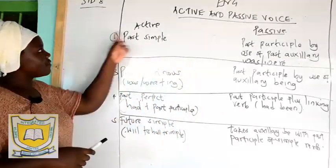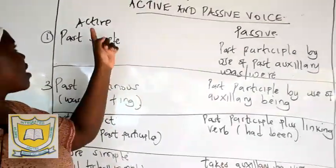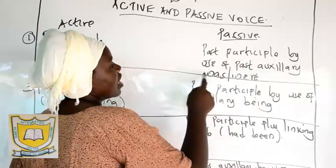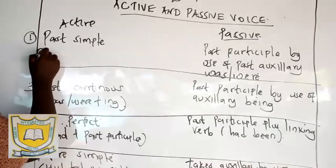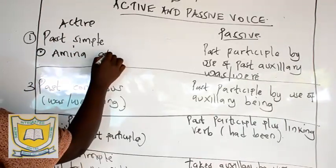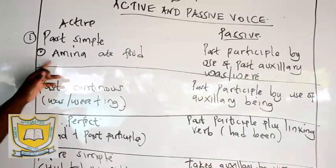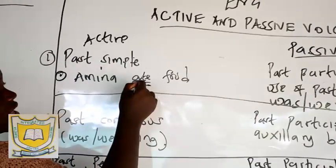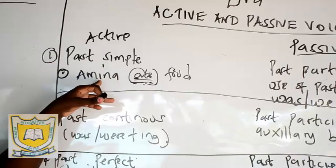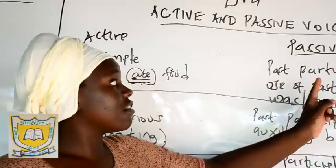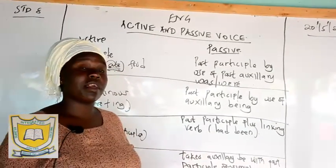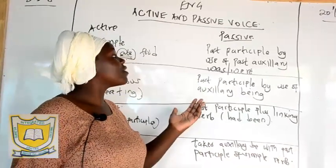So without further ado — active voice, past simple tense. If you have the active voice in the past simple tense and it changes to the passive voice, it is going to change to the past participle by use of past auxiliary 'was' or 'were'. 'Was' is for singular and 'were' is for plural. For example, in a sentence I am going to say: Amina ate food. This is a simple past tense — 'ate' is the past tense of the word 'eat'.